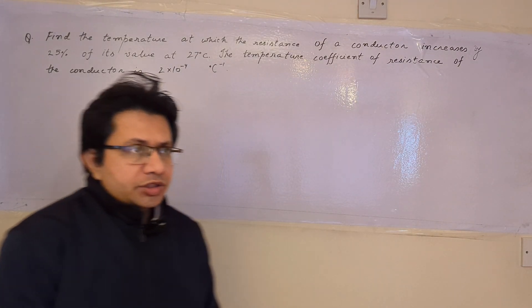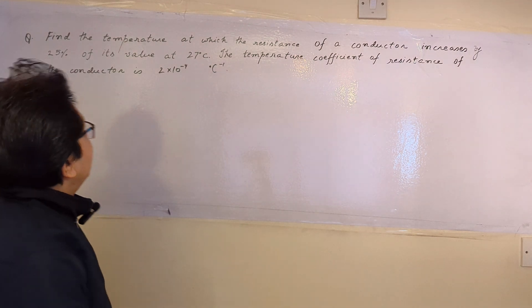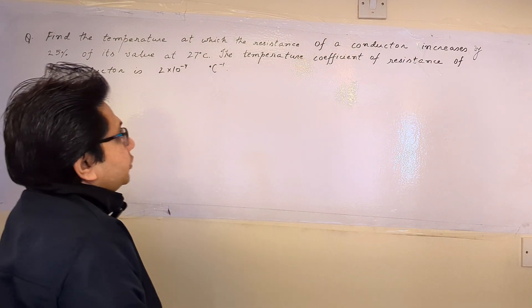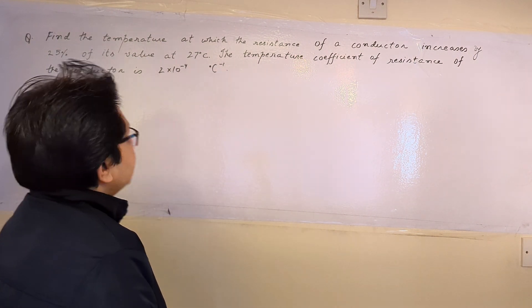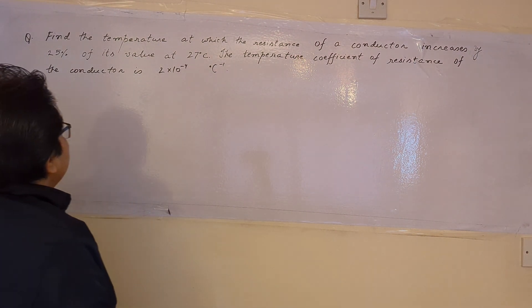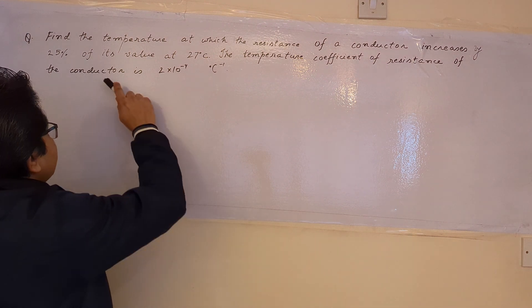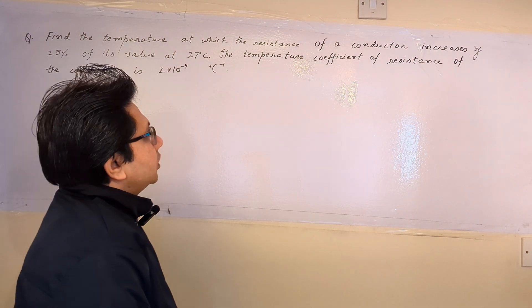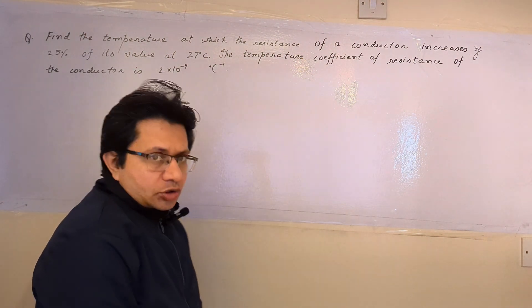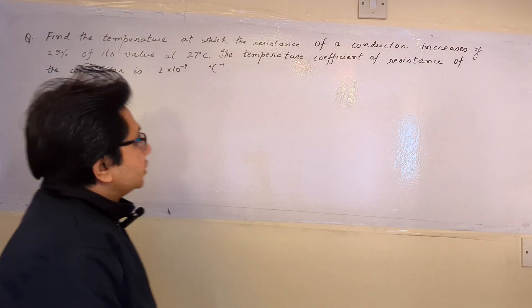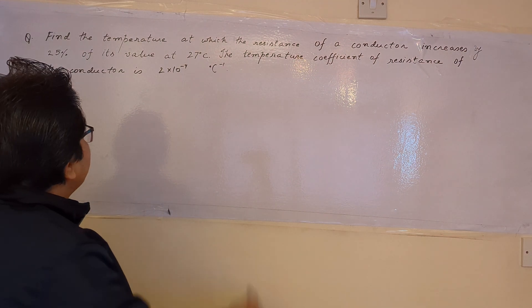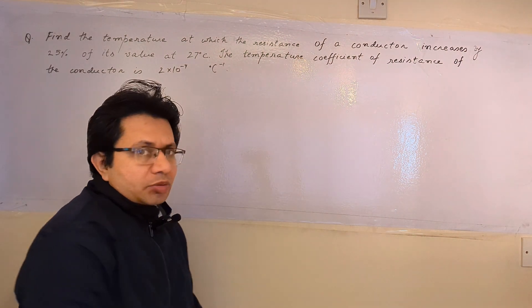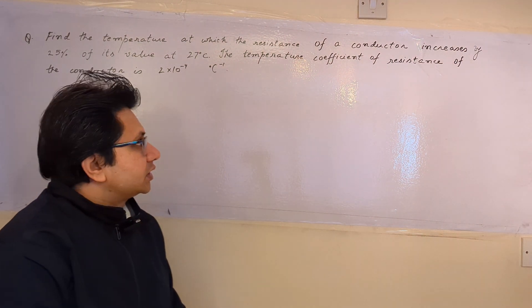Hello students. The question is: find the temperature at which the resistance of a conductor increases by 25 percent of its value at 27 degree Celsius. The temperature coefficient of resistance of the conductor is 2 into 10 raised to the power minus 4 per degree Celsius.